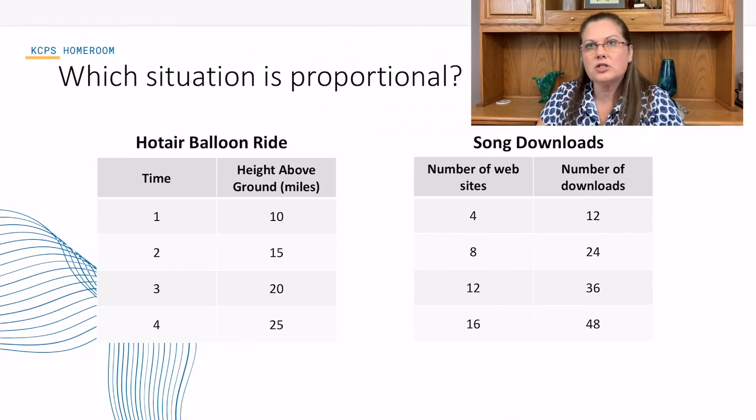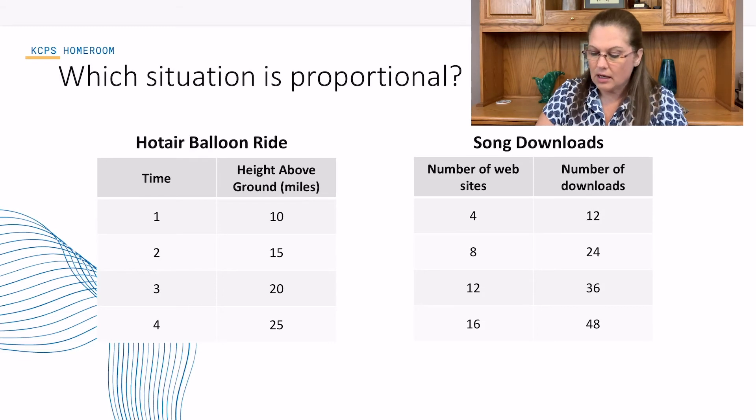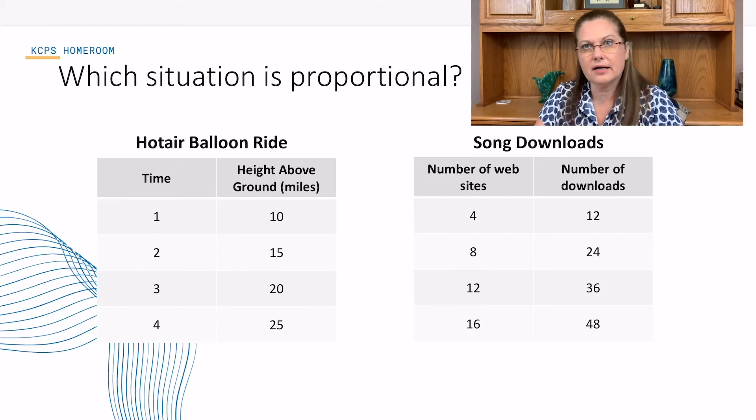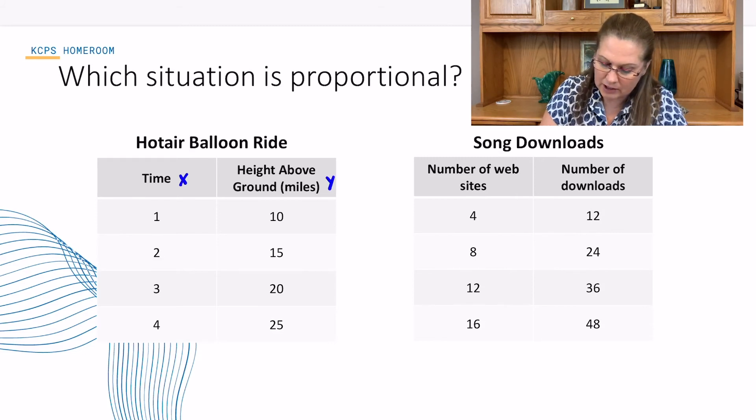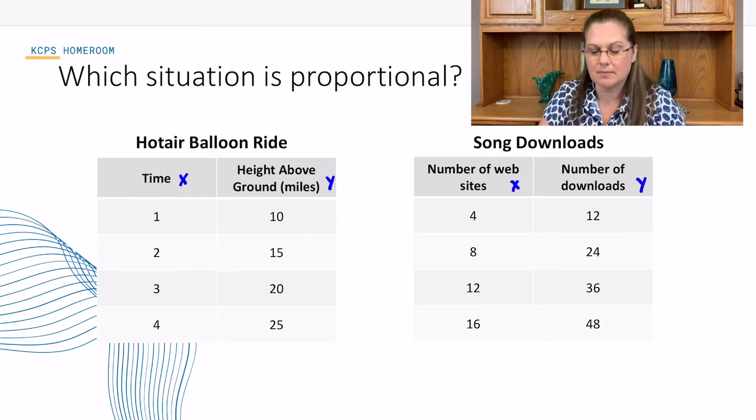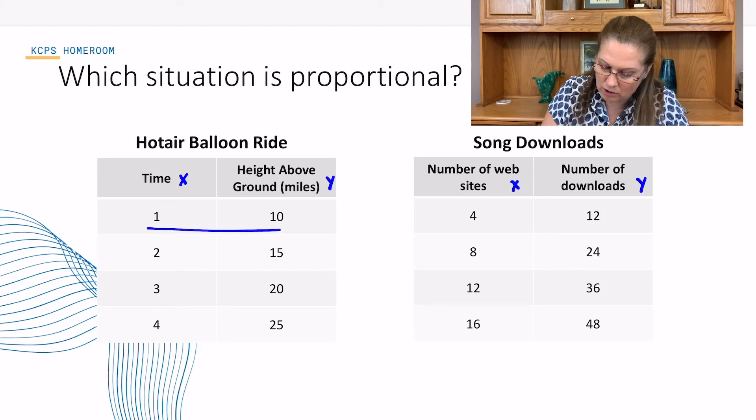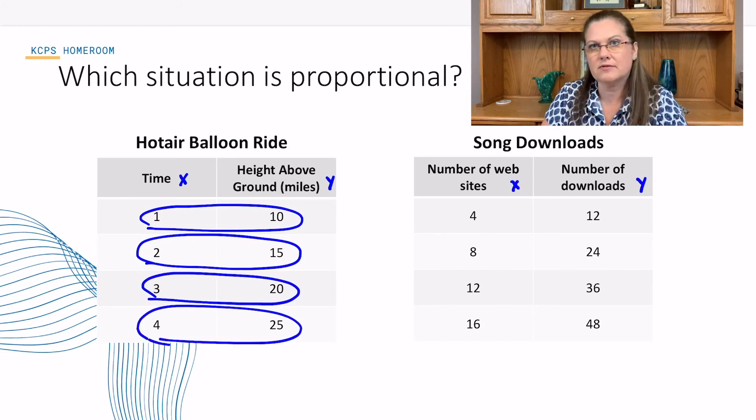We have time for 2 more examples. Which situation is proportional? In this particular situation, we have hot air balloons and we have song downloads. We can use an equation k equals y over x or y divided by x to figure out our ratio. Remember our vertical tables. Our x value is on the left. Our y value is on the right. I'll go ahead and put those for both tables. We're going to use ordered pairs. And ordered pairs are going to be found on the same row as each other. And I've circled them for you. So, let's go ahead and use our equation for constant proportionality and see what we find.